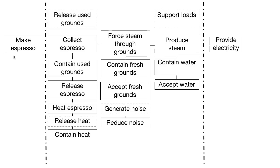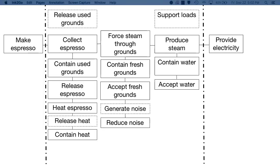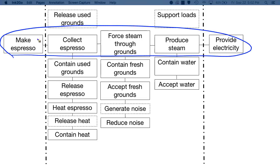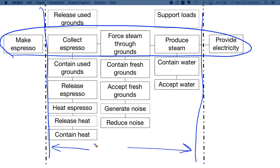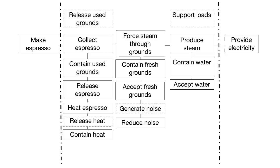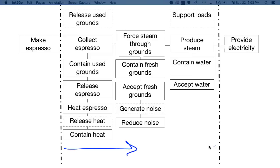Now that we've gone through the consequential functions, let's look at all-time functions. The espresso maker should release the used grounds, and it needs to support basic loads. Here's our completed FAST diagram for an espresso maker. Once again, we can see our critical path, our system boundaries, and the product domain. We can see the critical path in the center and confirm the how and why — how going from left to right, and why going from right to left along the critical path.